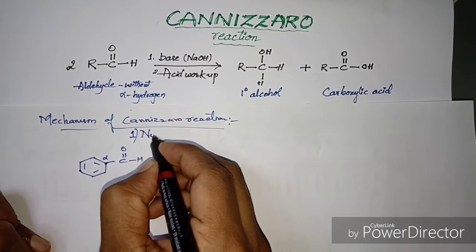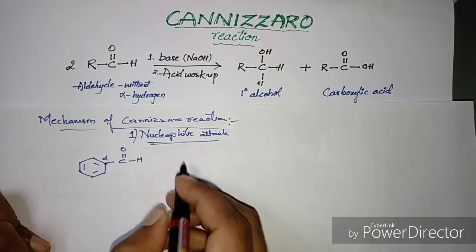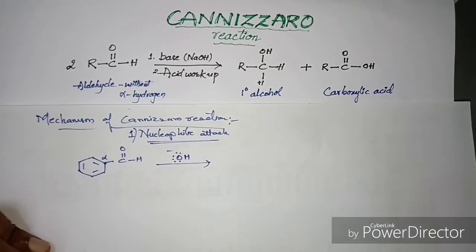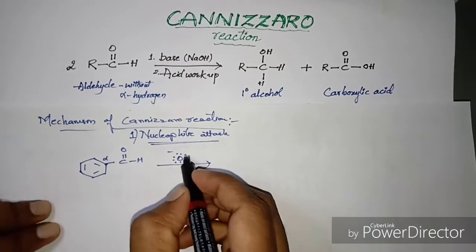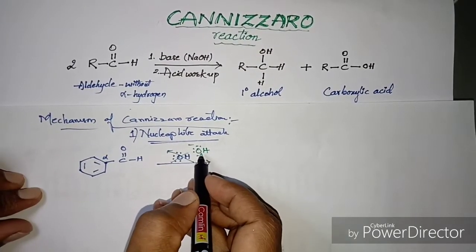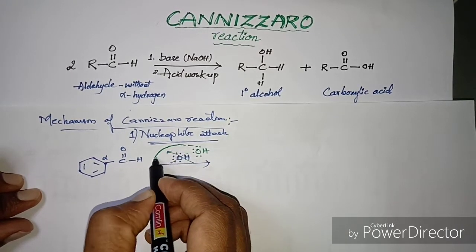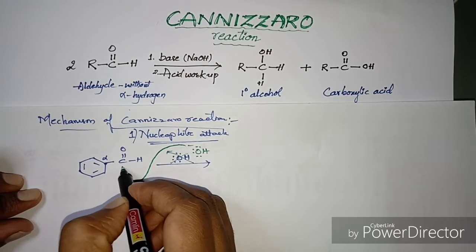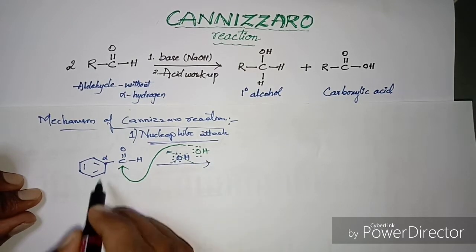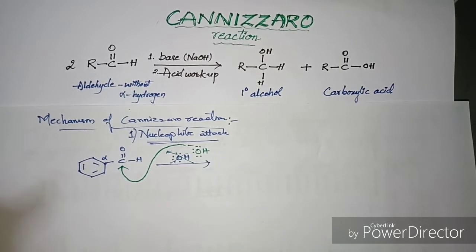The first step of the Cannizzaro reaction mechanism is a nucleophilic attack. OH⁻ is the nucleophile — being electron-rich, it attacks the electron-deficient or electrophilic atom. Here the carbonyl carbon is the most electrophilic atom, so the nucleophile directly attacks the carbonyl carbon in benzaldehyde.